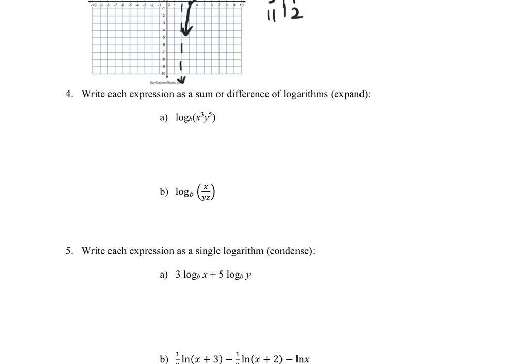Questions 4 and 5 are from section 4.2, expanding or condensing logarithmic expressions using the product property, quotient property, or power property. For question 4, part A, since x cubed multiplies y to the fifth, we apply the product rule to split into separate logarithms separated by addition: log base b of x cubed plus log base b of y to the fifth. Then applying the power rule, we move the exponents in front: 3 times log base b of x plus 5 times log base b of y.